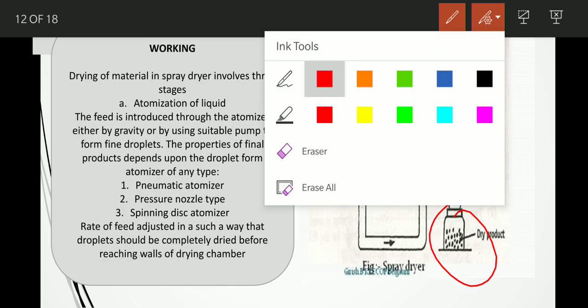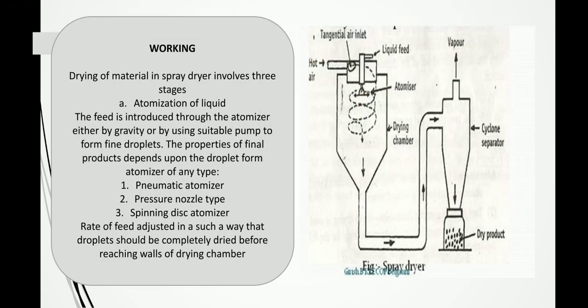Now let's talk about the working of the spray dryer. Basically the spray dryer has three main stages. The first stage is the atomization of the liquid. The feed is introduced through the atomizer either by gravity or by using a suitable pump, and it is converted into fine droplets. The properties of the final product depend on the form of droplets. There are different types of atomizers: pneumatic atomizer, pressure nozzle type, or spinning disc atomizer. You can use the appropriate atomizer based on your material.